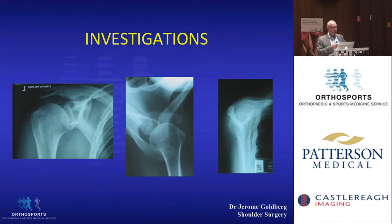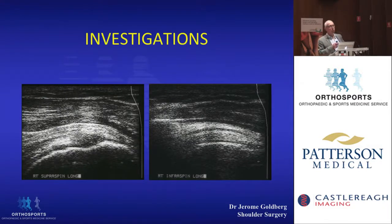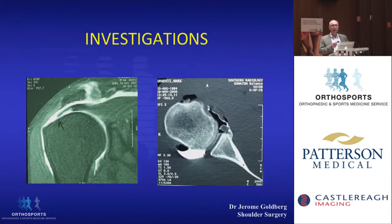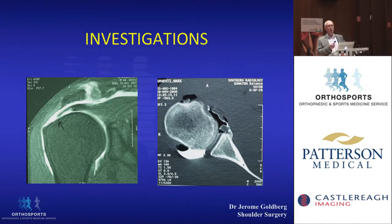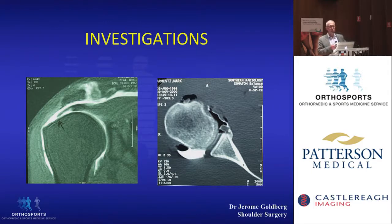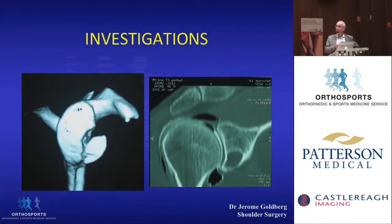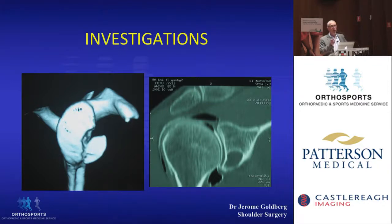Briefly on investigations: with these patients a plain x-ray is all you need to start. You don't need an ultrasound, which I hasten to add is a worthless investigation of no value whatsoever. You really don't need to order an MRI unless you're looking for something more specific, and if you do order one, I encourage you to order an MR arthrogram as it makes the MRI far more accurate. CT arthrogram is available for those who are claustrophobic. CT scans are used when looking for bony pathology. The take-home message is that in the vast majority of cases, all you need is a history, examination, and plain x-ray.